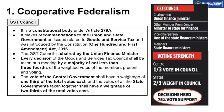The GST Council is chaired by the Union Finance Minister. All decisions in the GST Council are made on a voting basis. The state finance ministers are members of the GST Council. Any decision requires a majority of not less than three-fourths, meaning at least 75% votes in favor. The central government's vote value alone equals one-third, i.e., 33.33%, while all the states together have two-thirds, i.e., 66.66%.